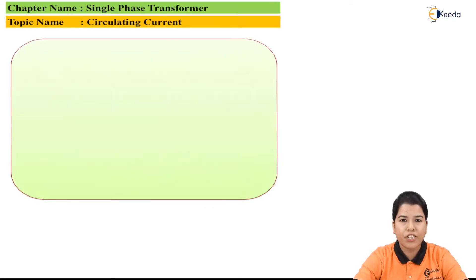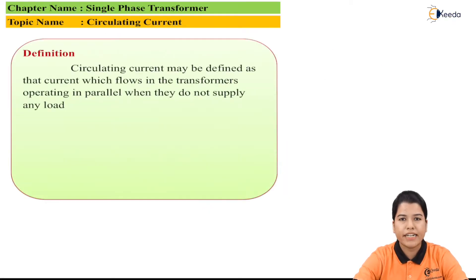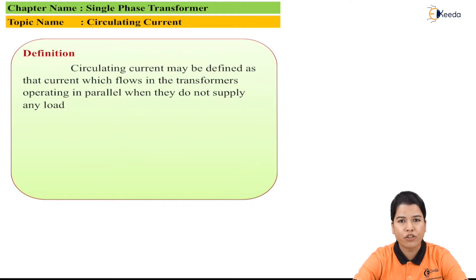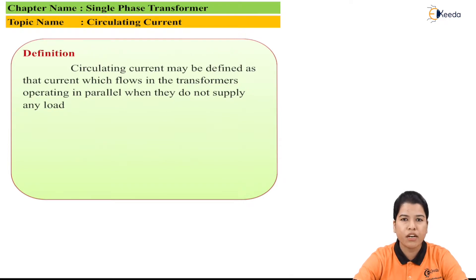Circulating current can be defined as the current which flows in the transformer when it is connected in parallel but not connected across the load. The basic reason for the circulating current is due to unequal voltages.